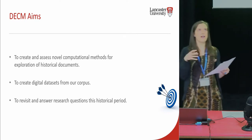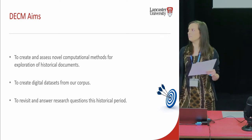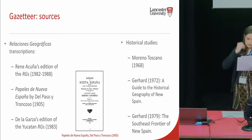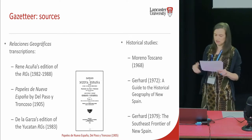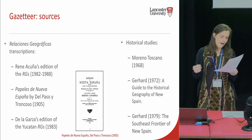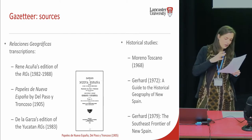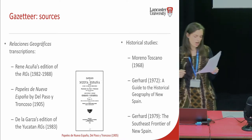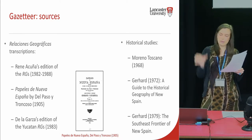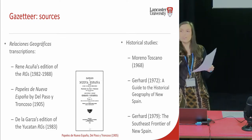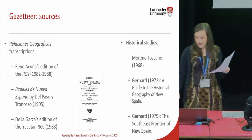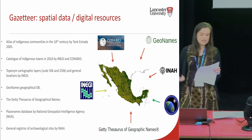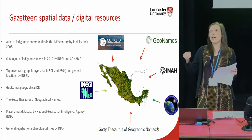From here I'm going to structure the presentation in two main blocks: first, we are going to explore the creation of the gazetteer, and we will finish with the computational methods. The gazetteer and the GIS system will help us to dig deeper into our research questions. To create them, we have several sources of information: on one hand, all the transcriptions of the original reports, which provide us with a list of place names mentioned in the sources, and on the other hand, a large set of historical studies that are essential for the disambiguation process. We also have a large number of digital resources containing the spatial data of current toponymy.